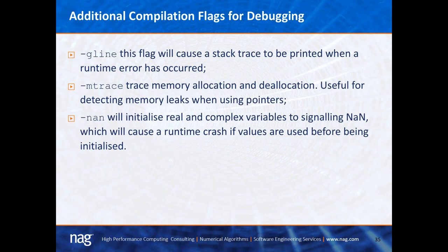There are additional compilation flags for debugging: the -gline flag causes a stack trace to be printed when a runtime error occurs. The -mtrace flag tracks memory allocation and deallocation, useful for detecting memory leaks when using Fortran pointers. The -NAN flag initializes real and complex variables to signaling NaN, which will cause a runtime crash if these values are used before being initialized.